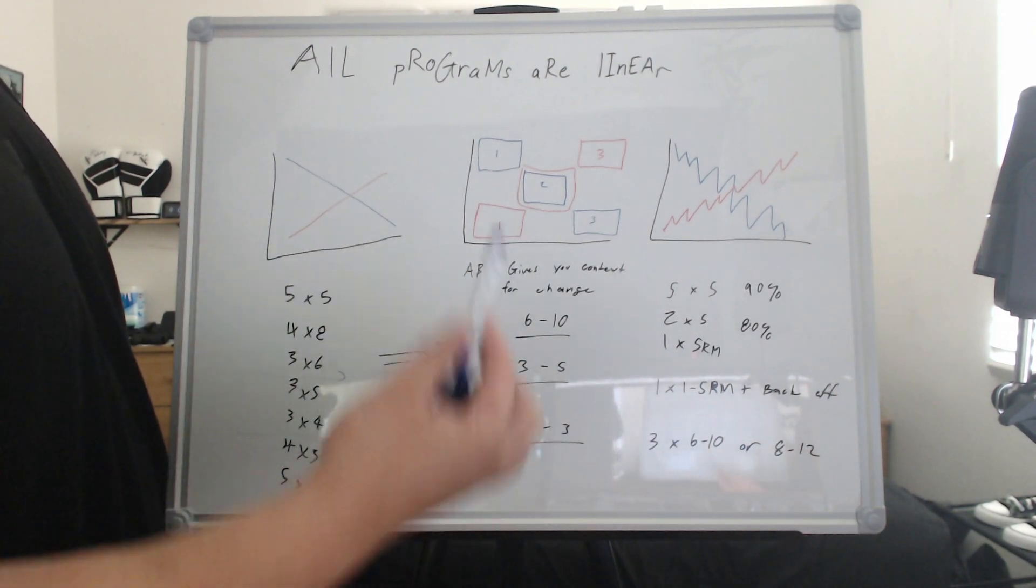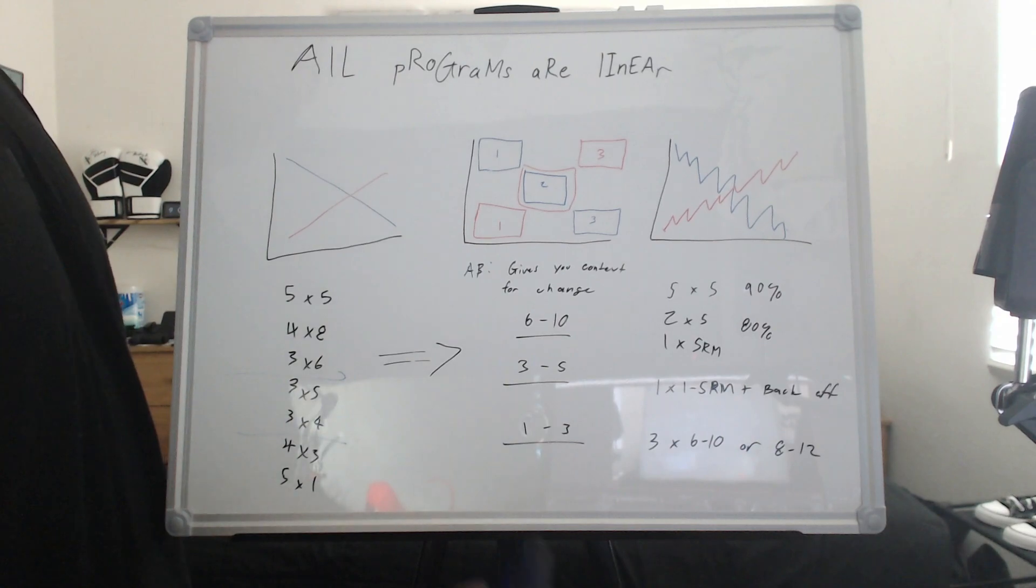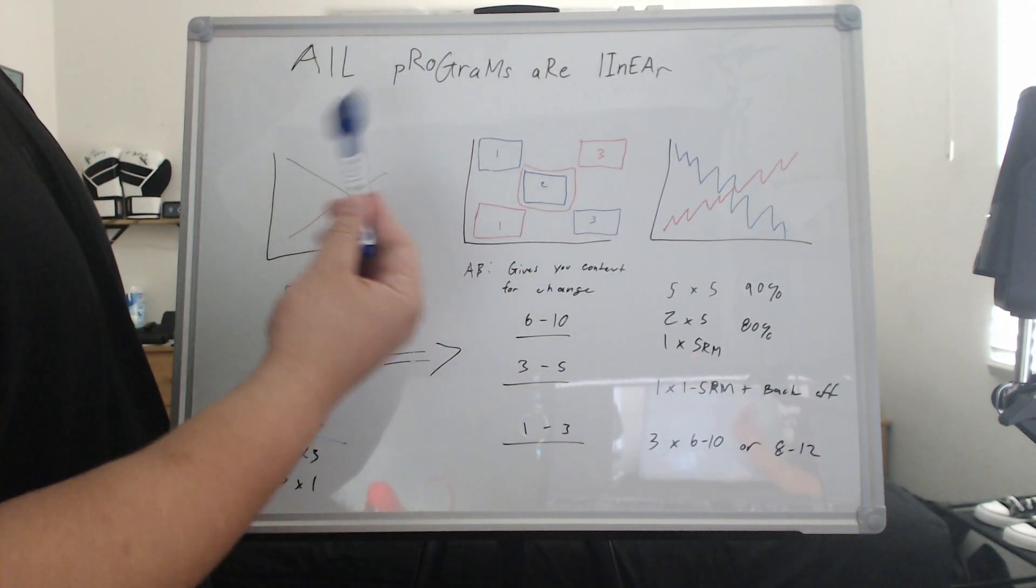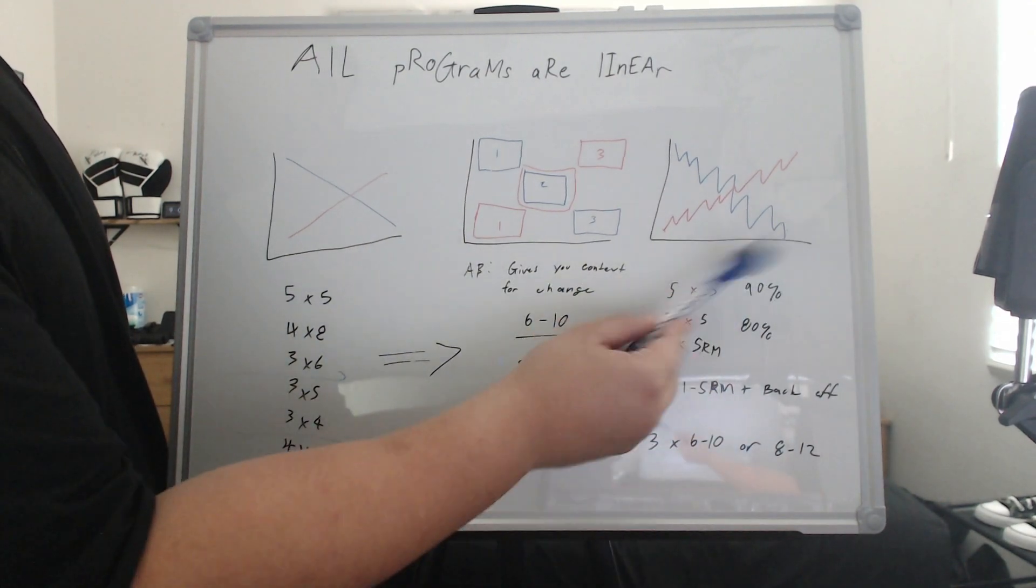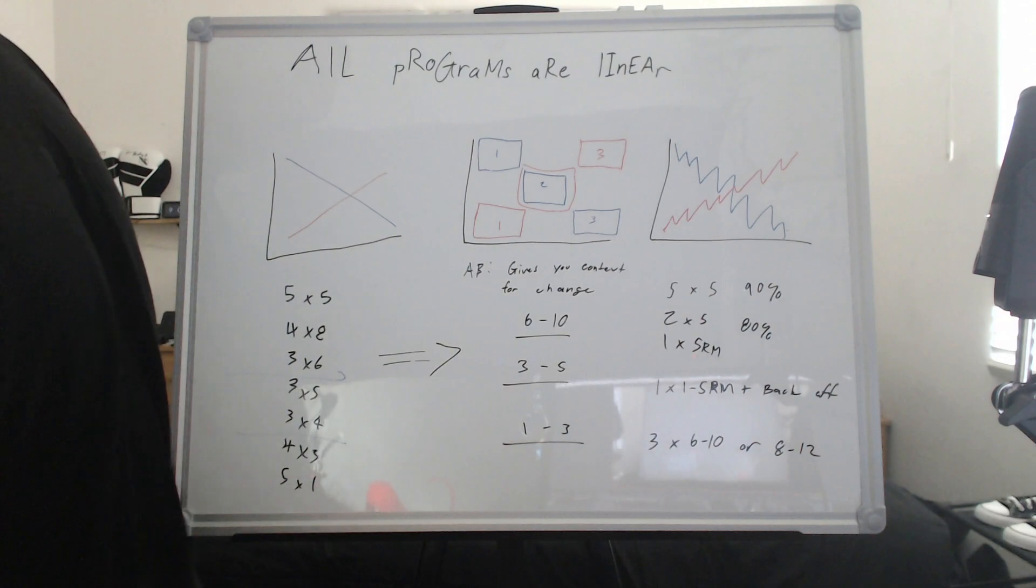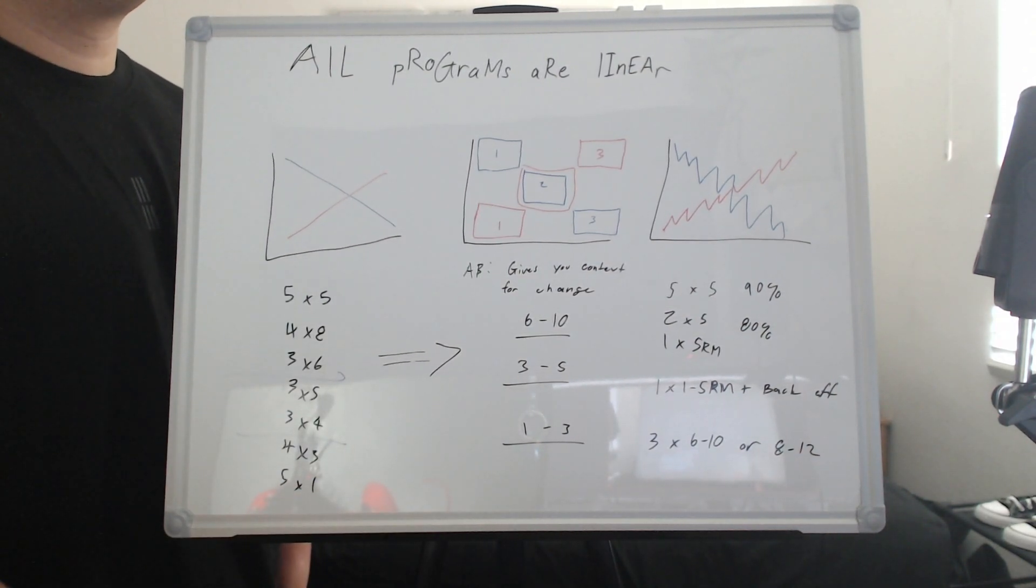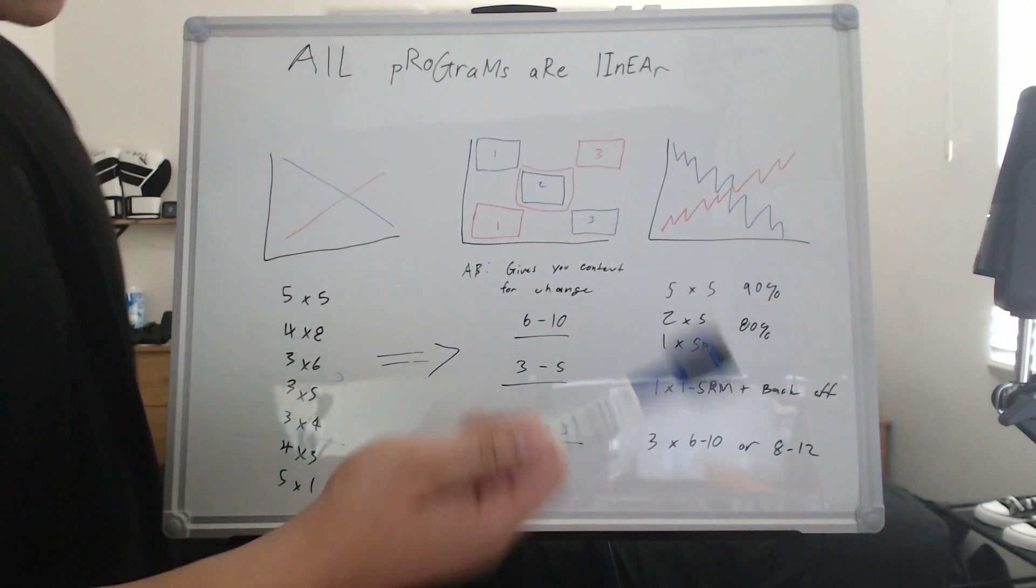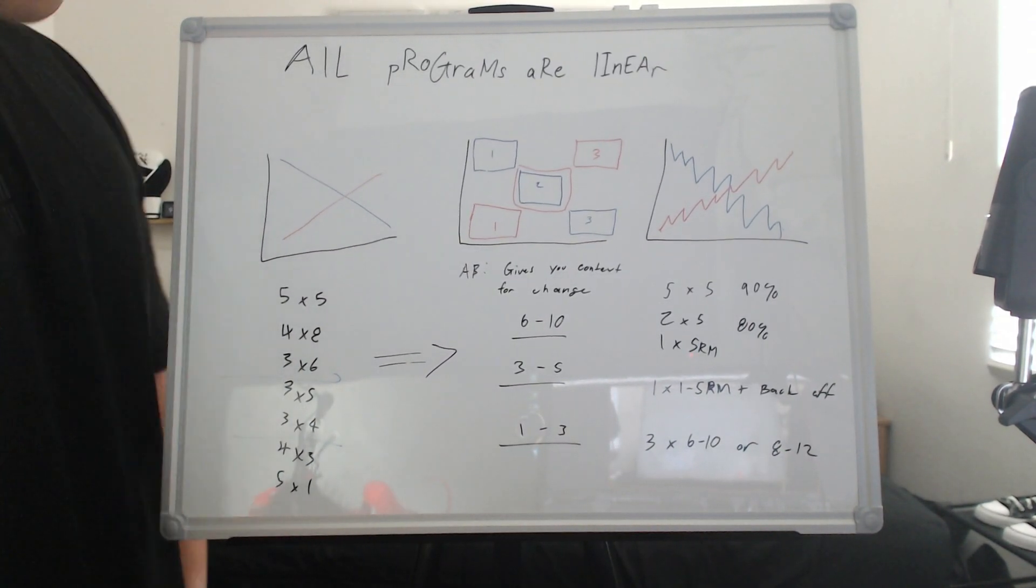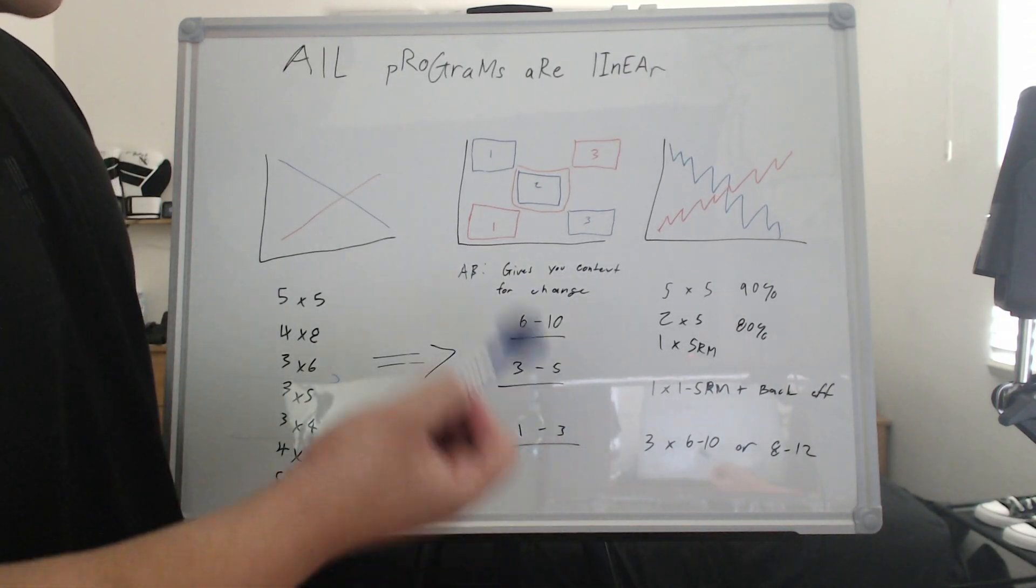It gives you better context for choices that you make elsewhere in the program. With a linear periodization model, you are basically told you're doing a certain amount of time in your tens, then your eights, then your sixes, then you start going into other phases. It doesn't really tell you anything about other things in the program. What about your accessories? What exercise selection should you have on your accessories? What type of progressions should you be running on your accessories? How much of your accessories should you be doing at this point in time? Block gives you context for all that, but that doesn't really change much when it comes to the main movement.